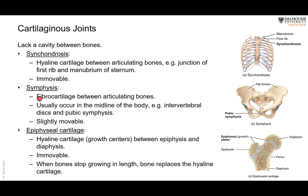The third type of cartilaginous joint is the symphysis. Examples include the symphysis pubis between the two pubic bones, the manubriosternal joint, and all the intervertebral disc joints between the vertebral bodies. In a symphysis, there is fibrocartilage — the strongest type of cartilage — sandwiched between two bones. These joints are usually located in the midline of the body and are slightly movable.